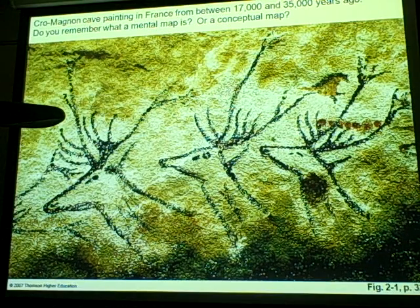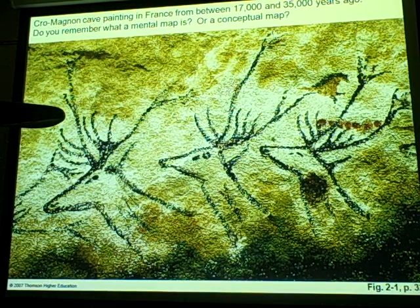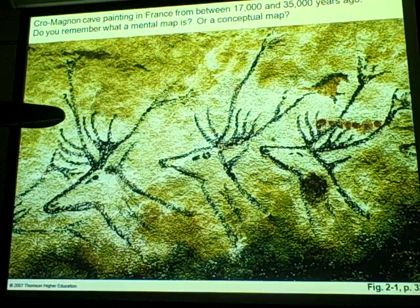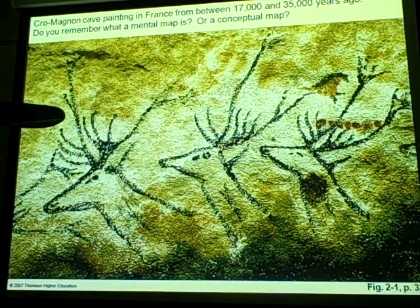Coral Magnin — cave paintings in France, quite a few thousand years ago. Earlier we talked about mental maps in Chapter 1 and conceptual maps. Technically, this is a map because it's a drawing, and it actually goes far beyond this little part here. It's a kind of pictogram showing where hunting is, what kind of animals you can find, where the distance is, and where to go. So it's a very, very simple map.